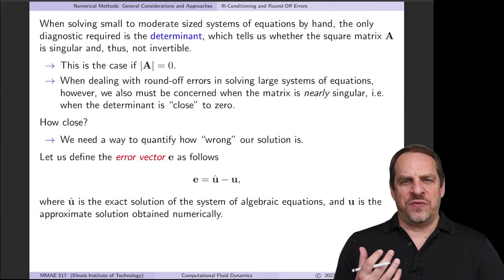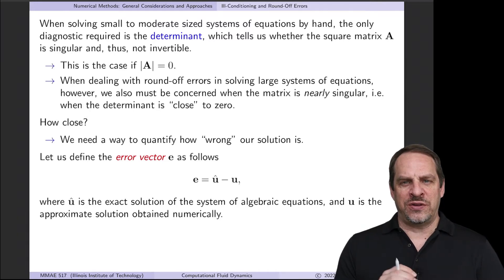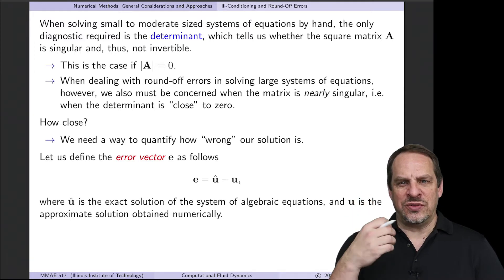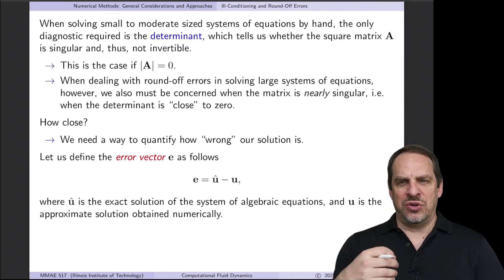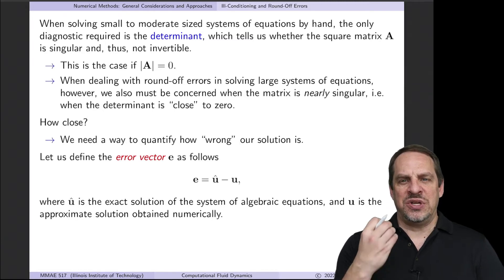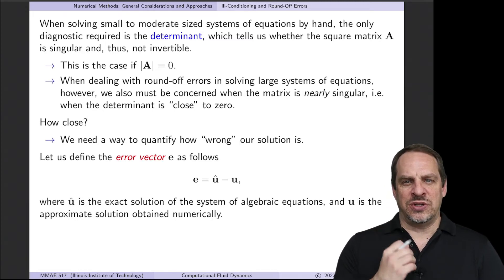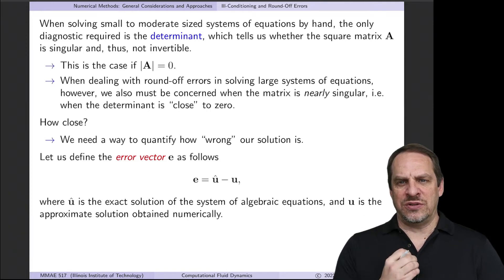In the previous video, we looked at round-off errors — where they come from. Now we want to take a look at how we can quantify the effect of those round-off errors in this video and the next. We're thinking about solving a system of linear algebraic equations on a digital computer using a direct or an iterative method, but using inexact arithmetic. These round-off errors exist because of how numbers are stored in digital computers. The question is: what is the effect of those round-off errors?